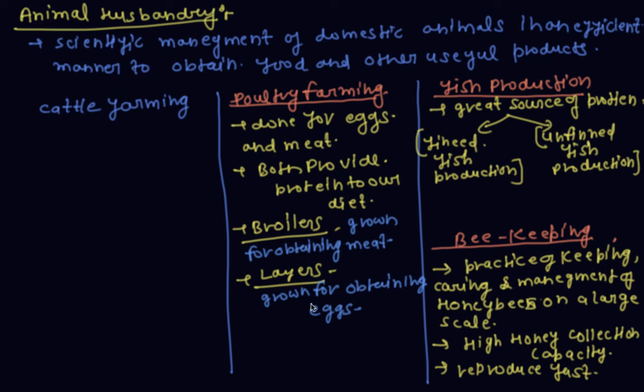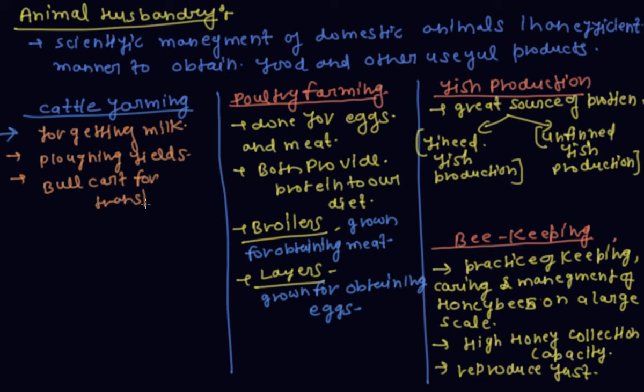Now discuss on cattle farming. In cattle farming, the purpose of cattle farming is for getting milk, second ploughing fields, and the third is bullock cart for transportation. The type of cattle is two types: cow and buffalo.